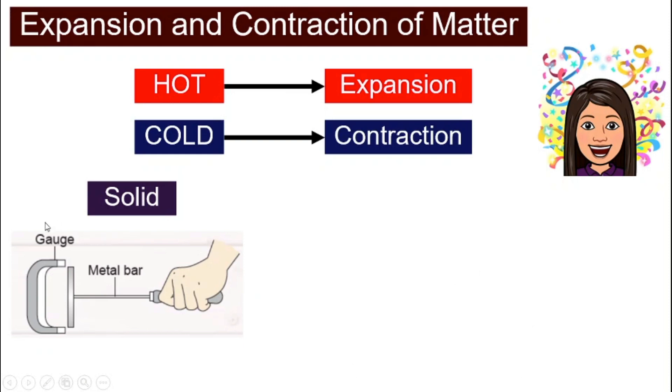For solid, here is a metal bar with a gauge. In the beginning, this metal bar will fit perfectly into the gauge. When you heat it up, you will quickly find out that the metal bar no longer fits into the gauge. It becomes too big. Why? When it is heated up, expansion happens.